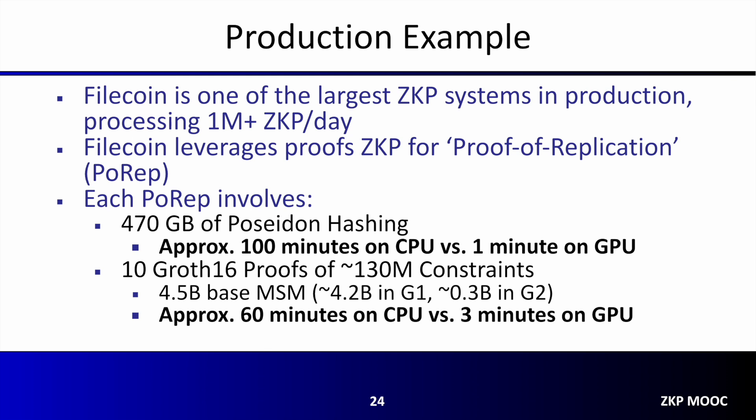For the cryptographic proof component of Filecoin, they leverage the Groth16 protocol. For each PoRep performed on the Filecoin network, a storage provider produces 10 proofs, each with approximately 130 million constraints, for a total of over 1 billion constraints. The MSMs alone required to create these proofs total approximately 4.5 billion point-scalar pairs. If computed on a many-core CPU they would take around an hour, but they can be completed in around 3 minutes on a GPU — approximately a 20x improvement. This example highlights the ability for hardware acceleration to make ambitious ZKP use cases practical.